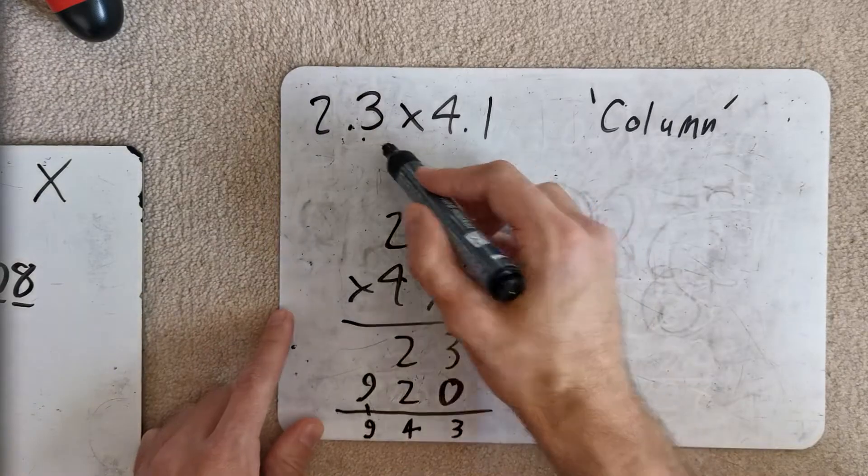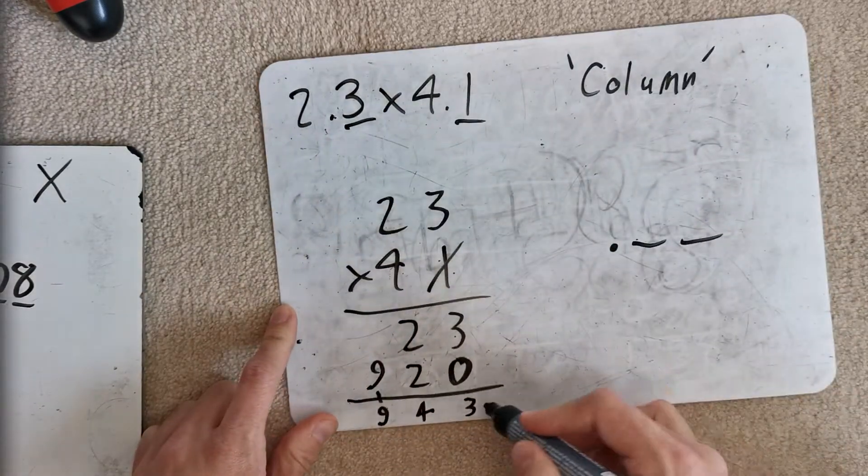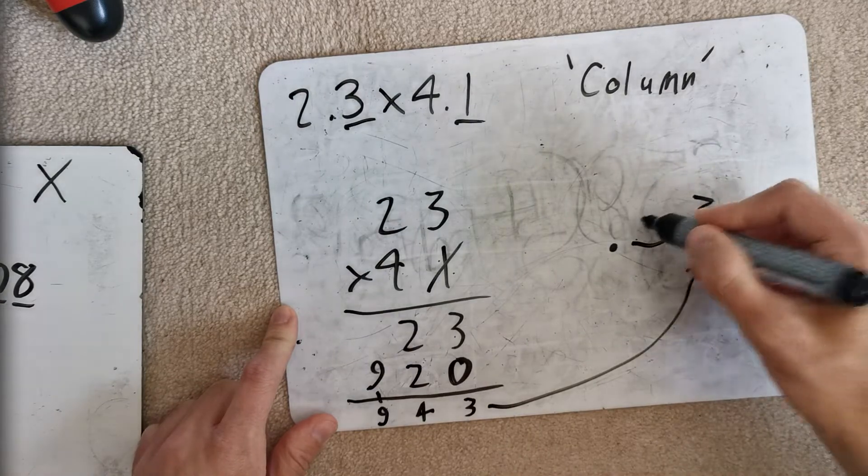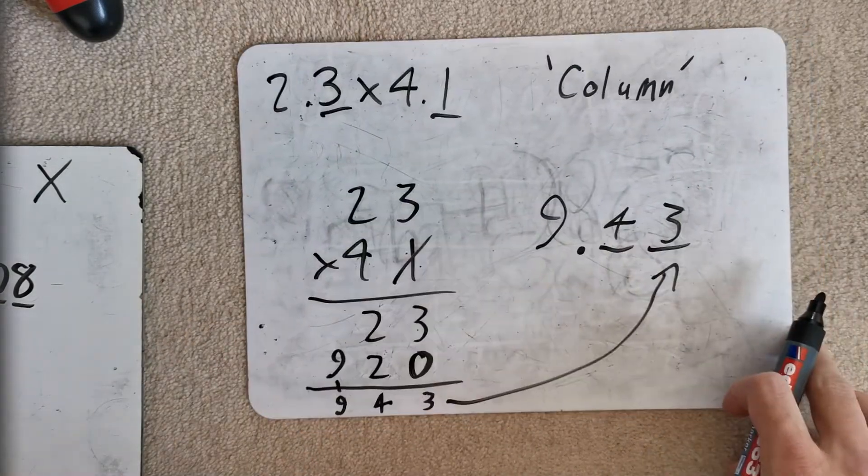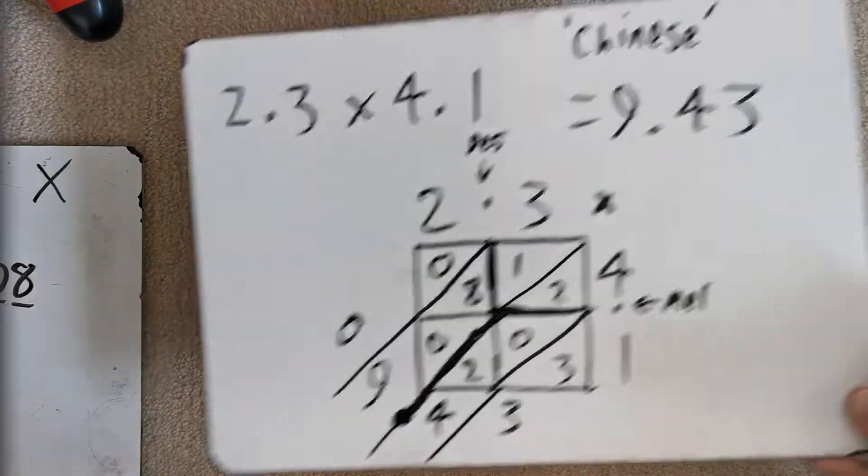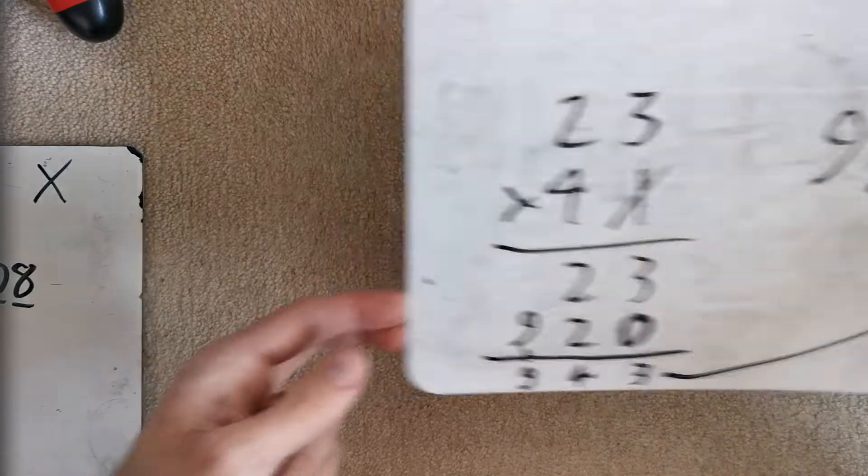Now, remember. 1, 2 decimal places in the question. 1, 2 in the answer. 3 goes there. 4 goes there. Flows over the decimal point. 9.43. 2 different ways you could do it. Up to you which one you choose. Okay? I'm going to set some questions and then give the answers afterwards.